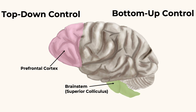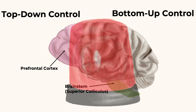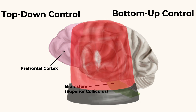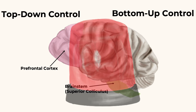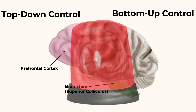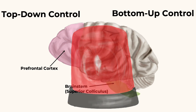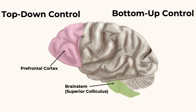Bottom-up attention is an involuntary process where your attention is caught by elements of the environment, such as looking to get out of the way of a cart with a blaring horn. Bottom-up attention functions to keep us safe from dangerous events by orienting ourselves to loud noises and bright lights.